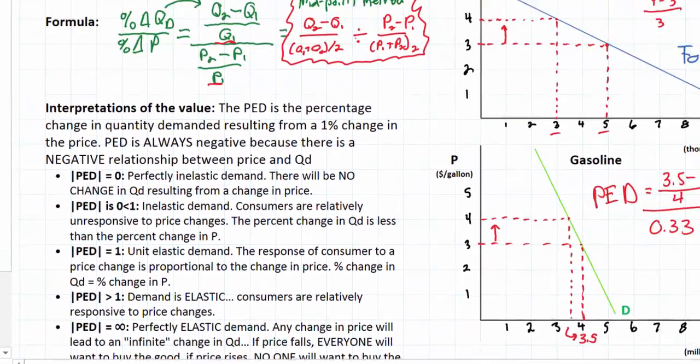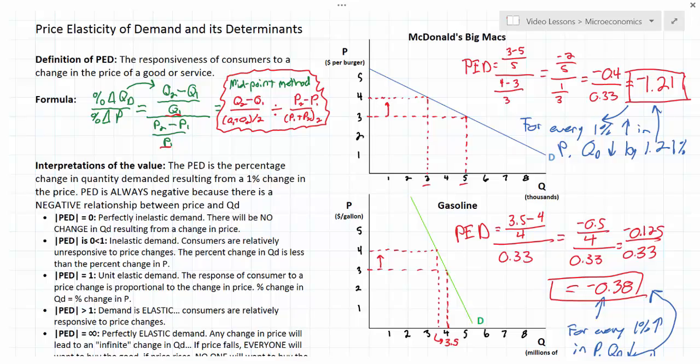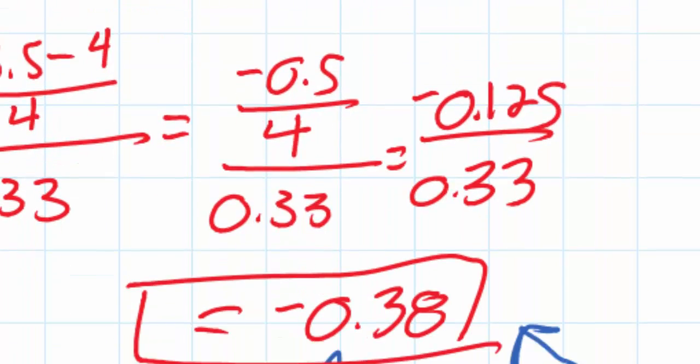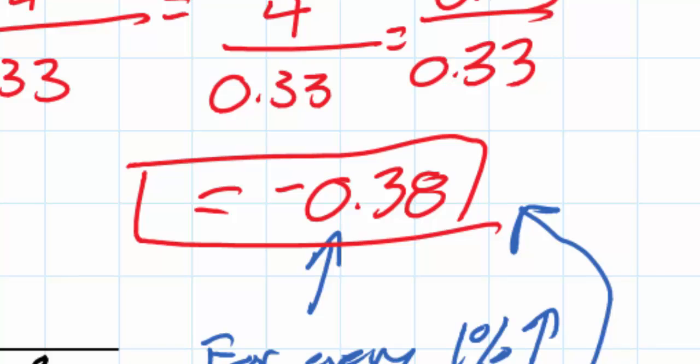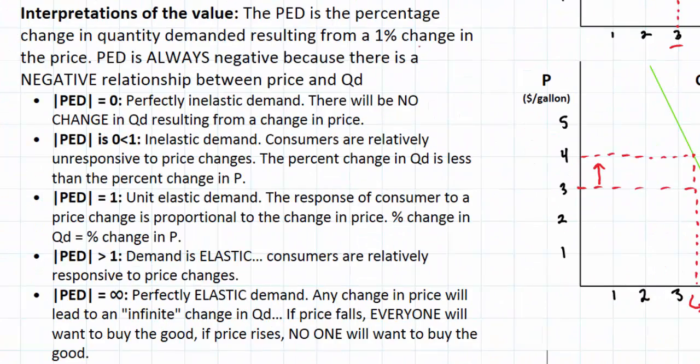So in this lesson, we've gone through the definition of PED. We've calculated PED using the simple formula for two goods, McDonald's Big Macs and gasoline. And through those calculations, we've determined that demand for McDonald's Big Macs is relatively elastic because the absolute value of the PED coefficient is greater than 1.